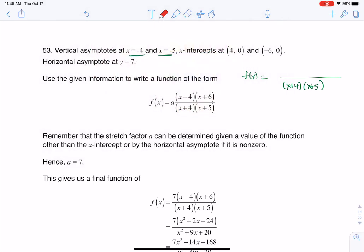Now they also tell me I have x-intercepts at 4 and negative 6, and so that's gonna tell me that in my numerator I have an x minus 4 and an x plus 6, and then again that's in my numerator only.